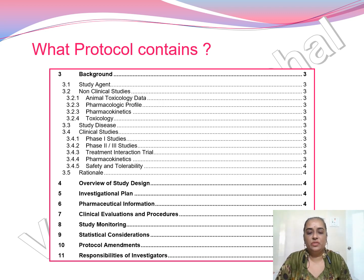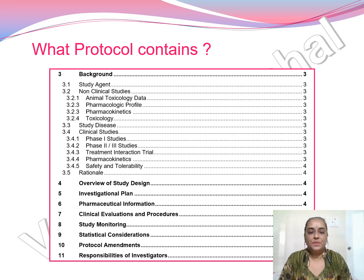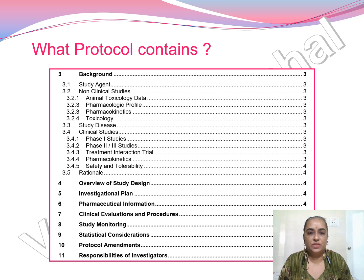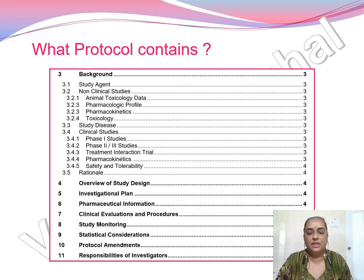The protocol also covers the responsibilities of investigators. This table of contents is just an example — it is not a hard and fast rule that you must follow this exact pattern. It is basically a definition or example to explain what a protocol contains for initiating a clinical trial. This covers the basic concepts of what a protocol is, what it contains, and its role and significance. Unless and until you have this, you cannot start a clinical trial — it is the very important initial stage of a molecule going through any clinical trial.